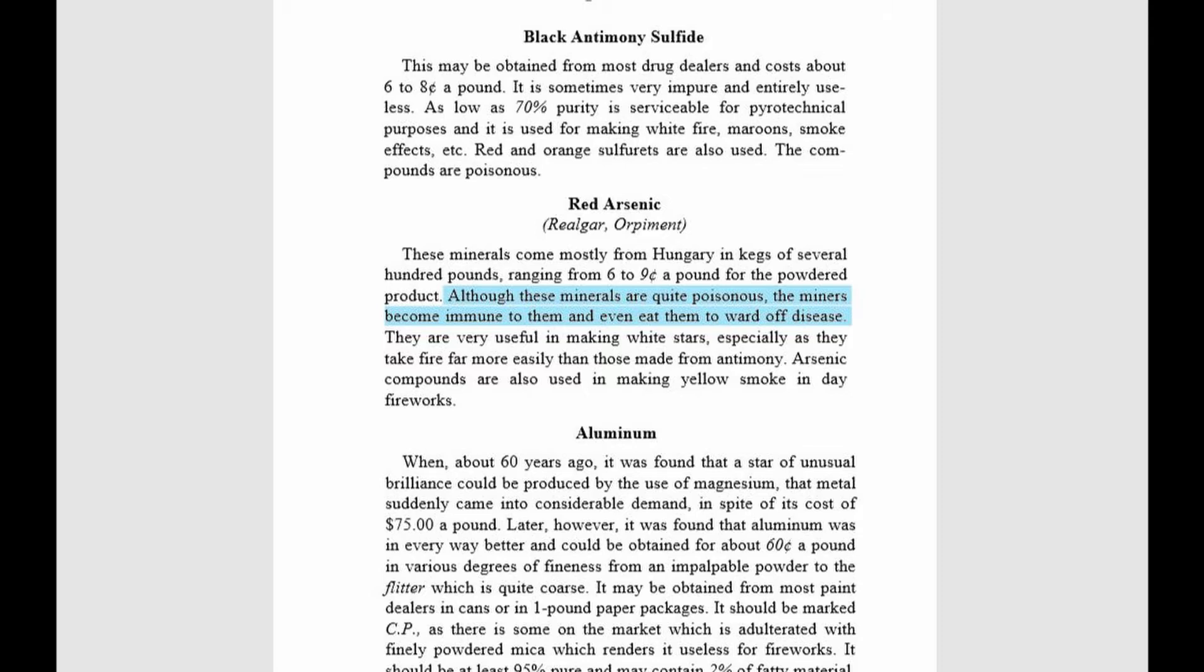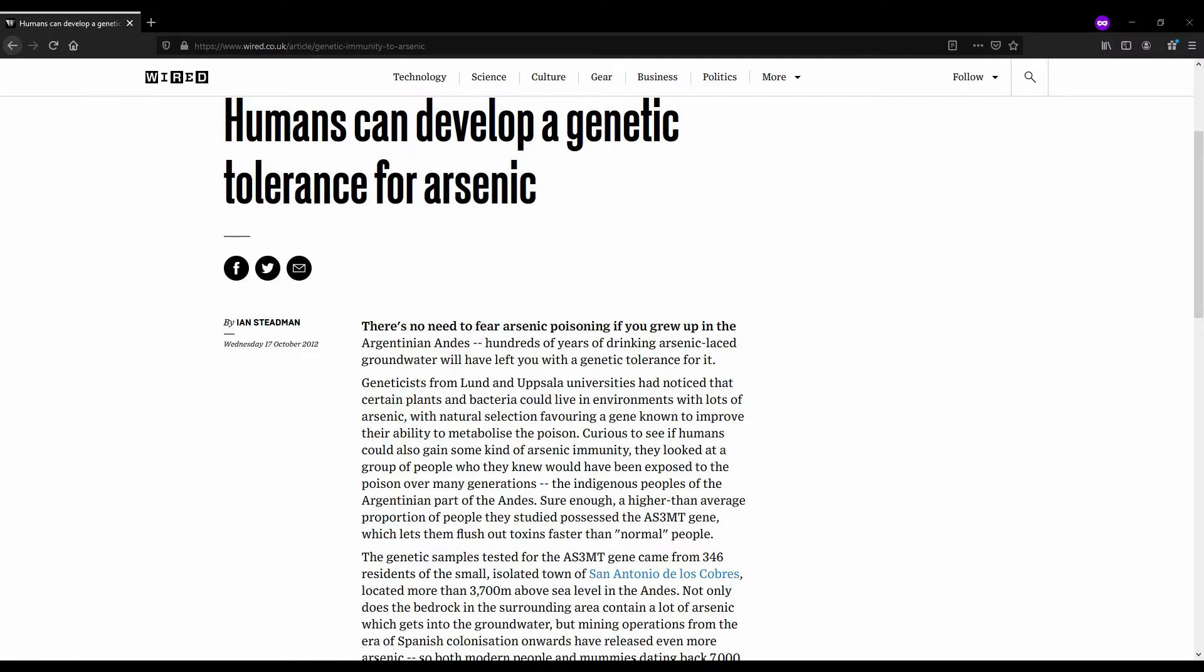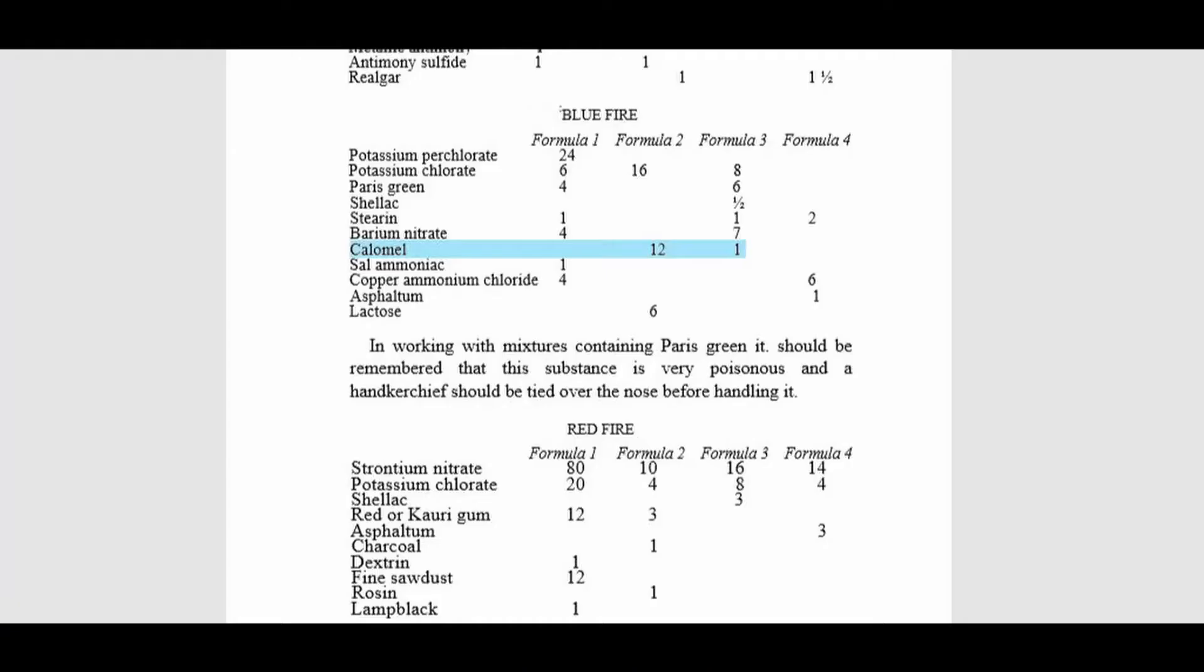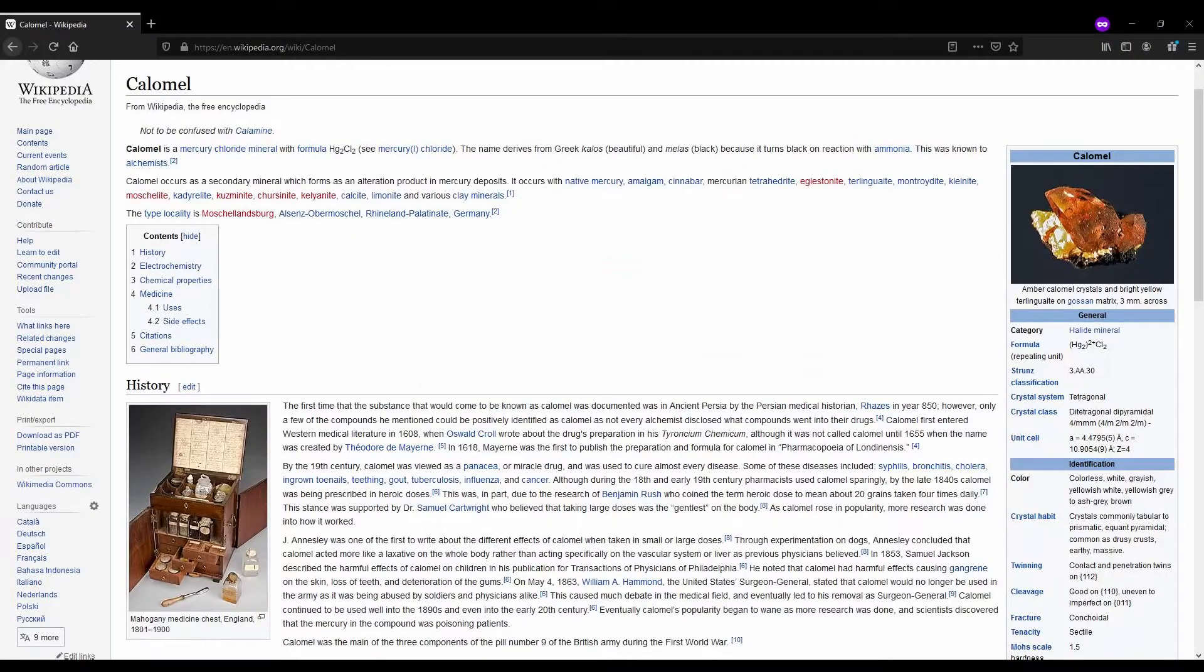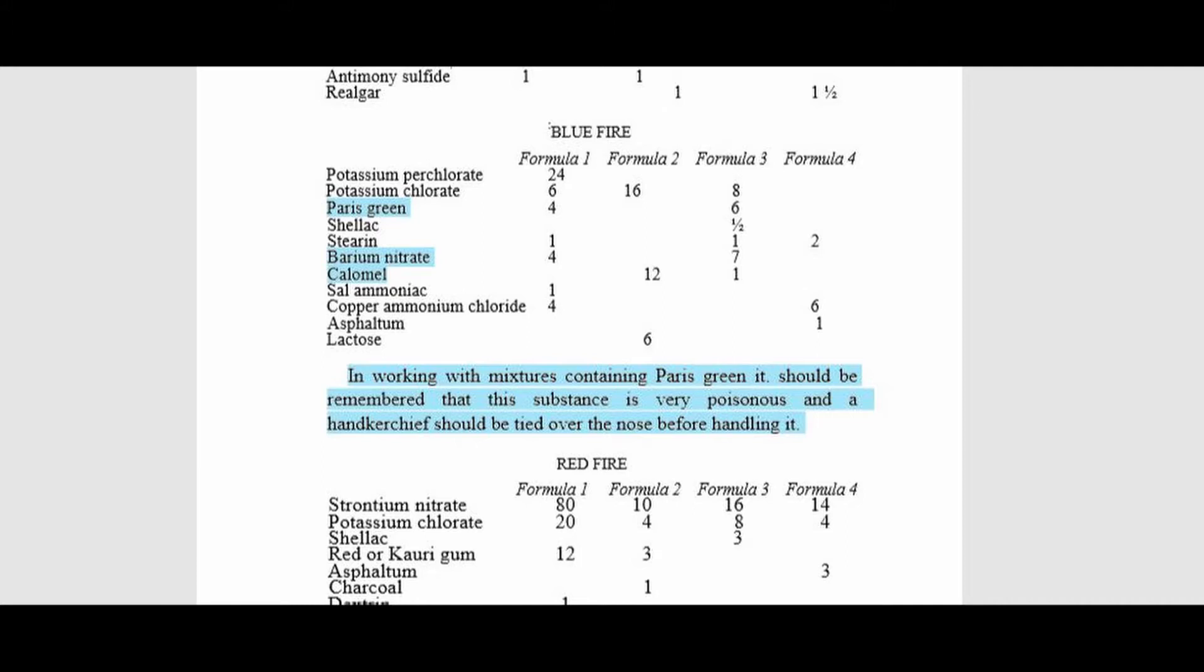I was very ready to call Weingart even crazier than Davis, but I did some research and, yeah, it turns out arsenic immunity might actually be a thing. You'll notice some of these formulas also call for calomel, aka mercuris chloride, which was used as a chlorine donor in the days before parlon and PVC existed. Needless to say, mercuris chloride is also pretty toxic, but luckily Weingart warns us of the danger of mercury. Nope. Just the danger of Paris green. No mention of the mercury salt or barium nitrate being toxic, and he recommends a handkerchief as PPE. 1947 was absolutely wild.